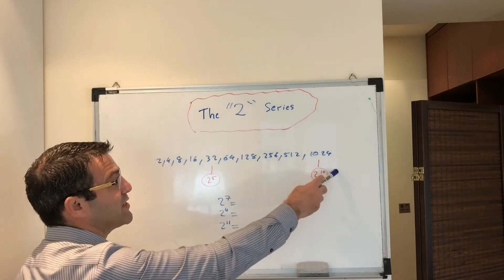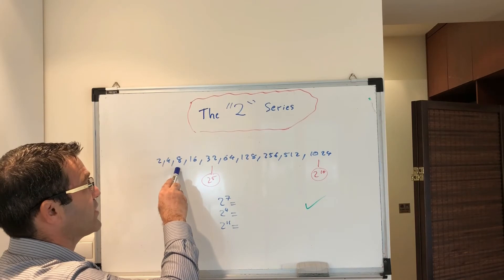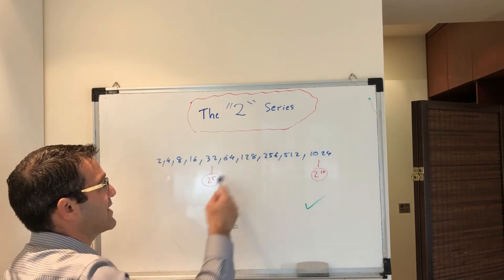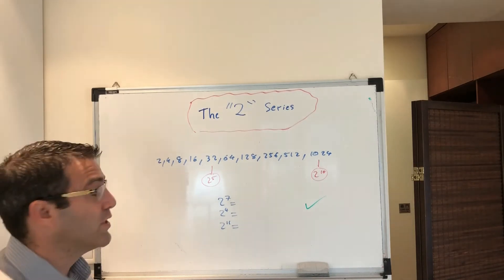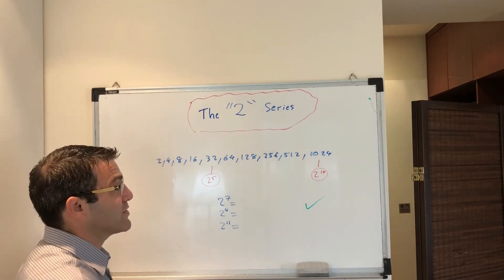So try and understand that this sequence goes from 1 to 10. 2 to the power of 1, 2 to the power of 2, 2 to the power of 3, 4, 5, 6, 7, 8, 9 and 10. 2 to the 5 is 32 and 2 to the 10 is 1024. Just put them in your mind. Don't forget them.